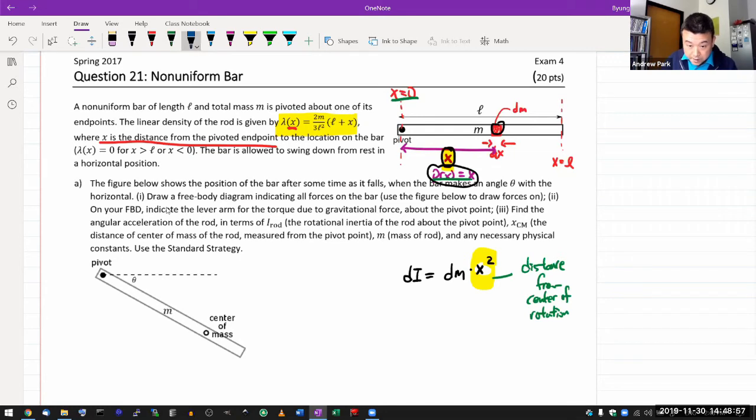So once you have that, then you can write out dI is equal to dm, it's the same deal as before. It's a density times dx. That's kind of what density means. So let me write out this density as a function of x. dx times the density, which is 2m over 3L squared L plus x. So that's dm times x squared.